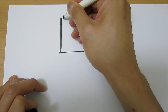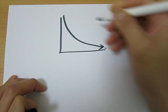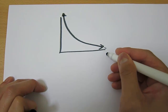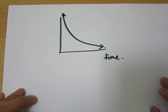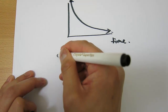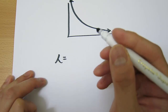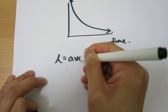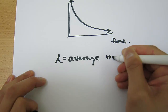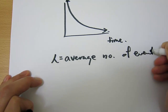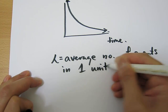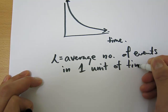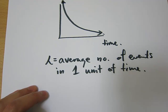The exponential distribution looks like this — you don't really need to draw the graph, but it looks like that. On the x-axis you have time. The parameter of interest is called lambda, and lambda is the average number of events in one unit of time.